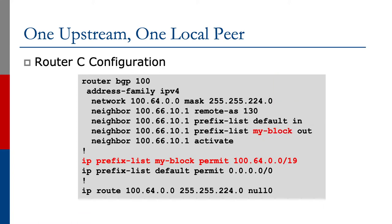If we look at Router C, which connects to the upstream provider, all we have here is a prefix list allowing the default route in and a prefix list allowing the local aggregate outbound. So in this case, we've got a default route from the upstream provider and we've allowed in a couple of prefixes from our local peer. Hardly a complicated BGP configuration, and this is all that's required.